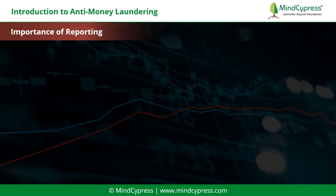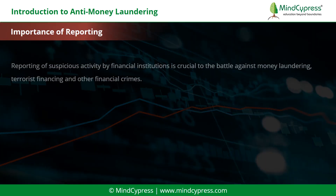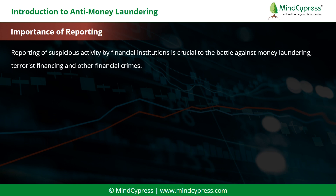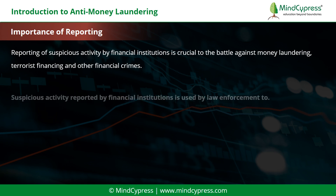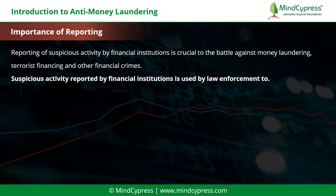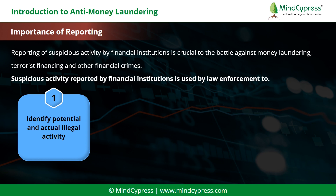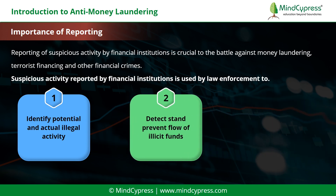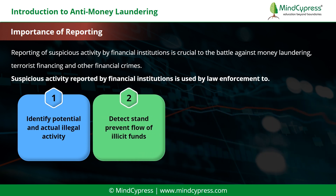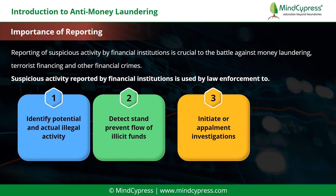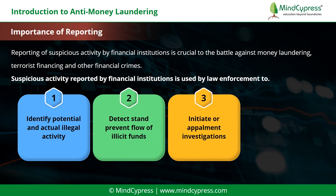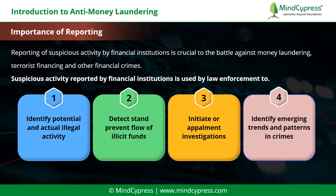Let's understand the importance of reporting. Reporting of suspicious activity by financial institutions is crucial to the battle against money laundering, terrorist financing, and other financial crimes. Suspicious activity reported by financial institutions is used by law enforcement to: first, identify potential and actual illegal activity; second, detect and prevent the flow of illicit funds; third, initiate or permit investigations; and fourth, identify emerging trends and patterns in crimes.